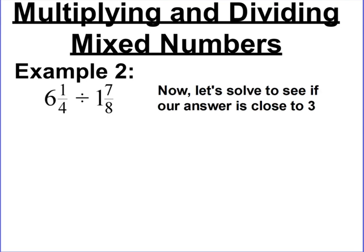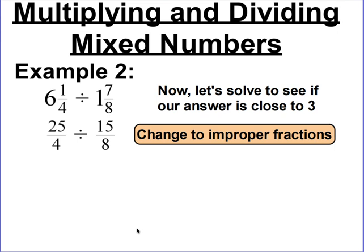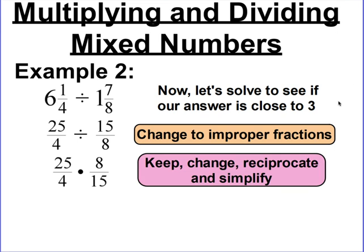First thing: improper fractions again — that's what we have to do first for all of these mixed number problems. I did 6 times 4 plus 1 to get 25 over 4, and 8 times 1 plus 7 to get 15 over 8. Now with division, we have that extra step at the beginning: keep, change, reciprocate. So keep 25 over 4 as 25 over 4, change division to multiplication, and reciprocate 15 over 8 to become 8 over 15.